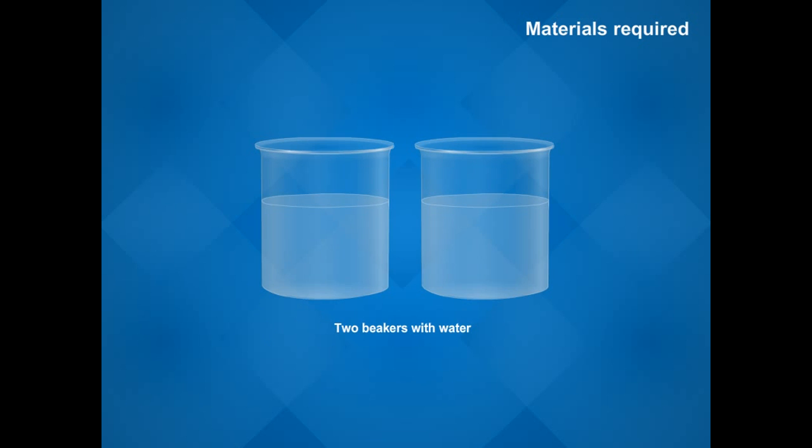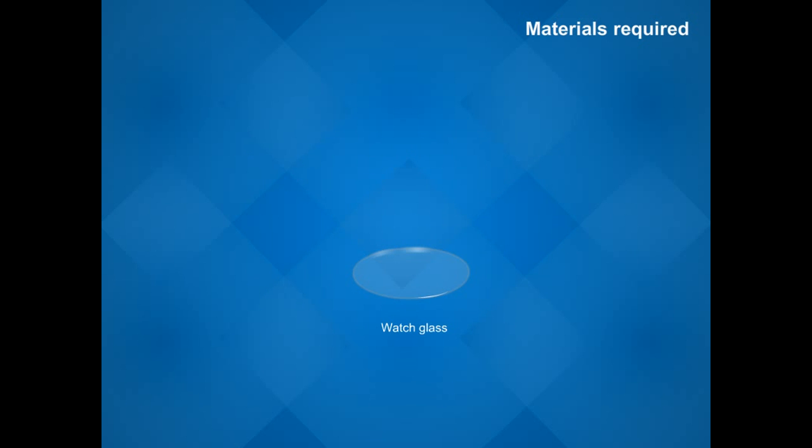Materials required: healthy potted plant, alcohol, iodine solution, dropper, forceps, tripod stand with wire gauge, Bunsen burner, two beakers with water, watch glass, and test tube.